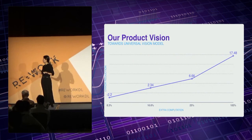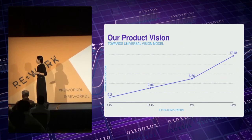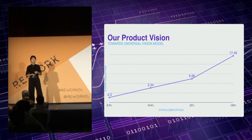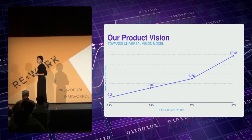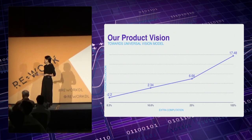In one example on one of our product models, by allowing an additional 16% of actual computation, we can reduce the error by 2% compared to where we were before. And if we allow fine-tuning of the entire network, we can actually get a 17% performance boost.